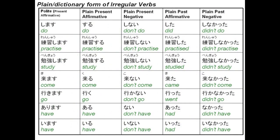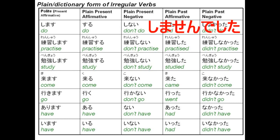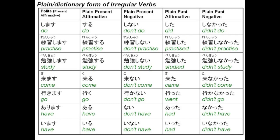Finally, we'll look at the plain form of irregular verbs. The plain form of shimasu is suru. Shimasen becomes shinai. Shimashita becomes shita. Shimasen deshita becomes shinakatta. You can see two examples with renshuu shimasu and benkyou shimasu. So renshuu shimasu is renshuu suru, renshuu shimasen becomes renshuu shinai, renshuu shimashita becomes renshuu shita, and renshuu shimasen deshita becomes renshuu shinakatta.